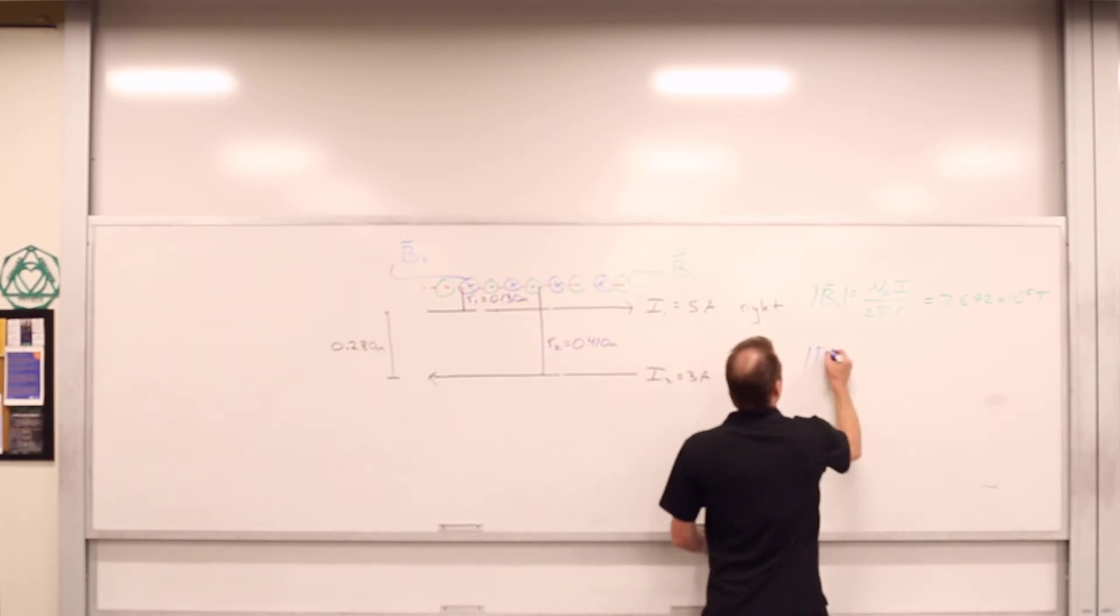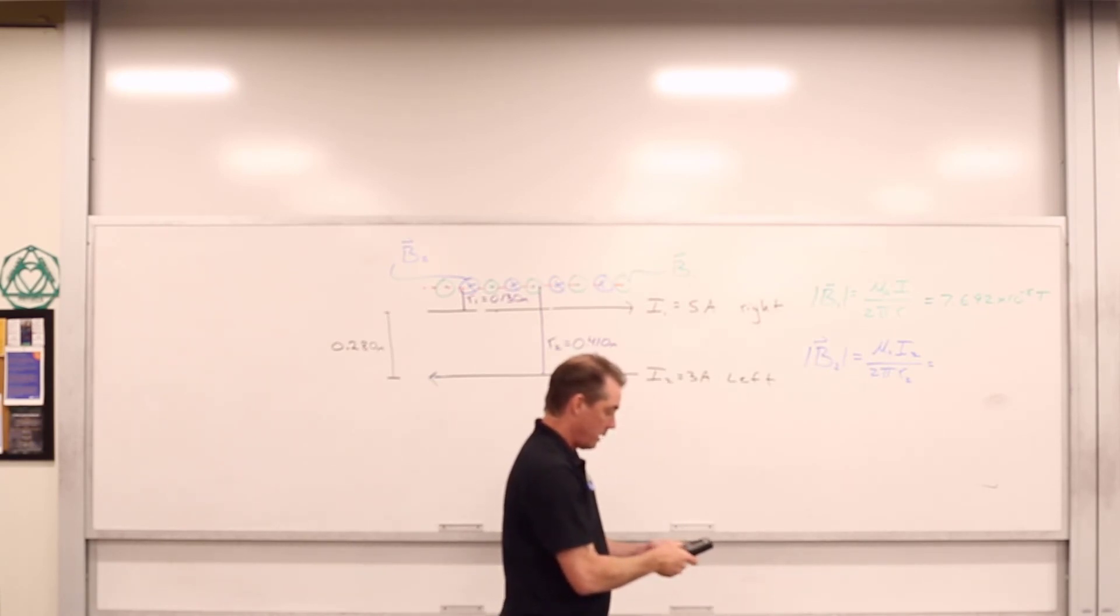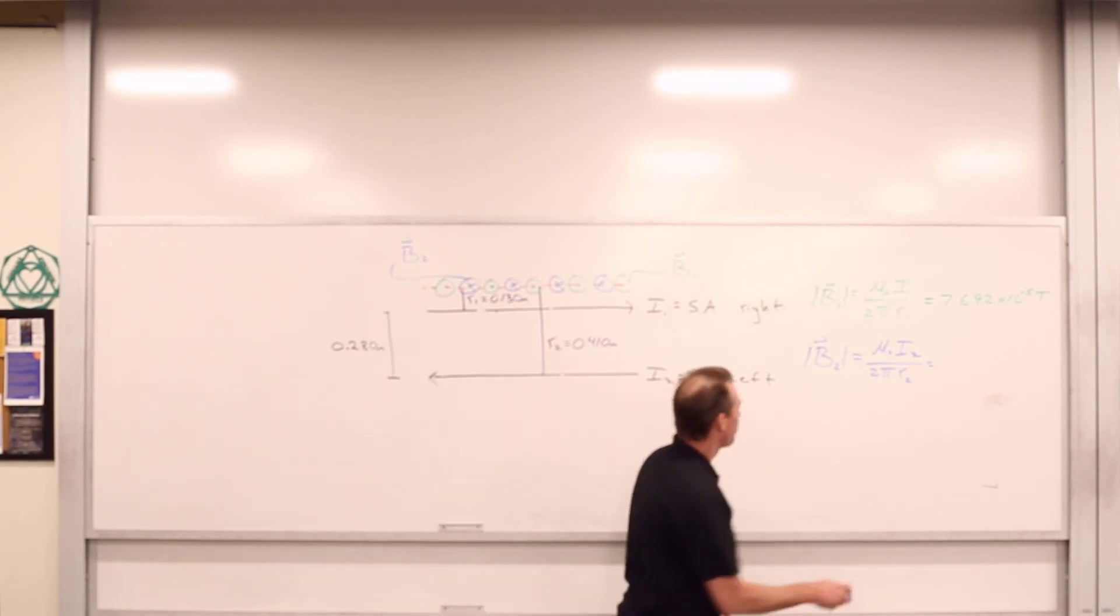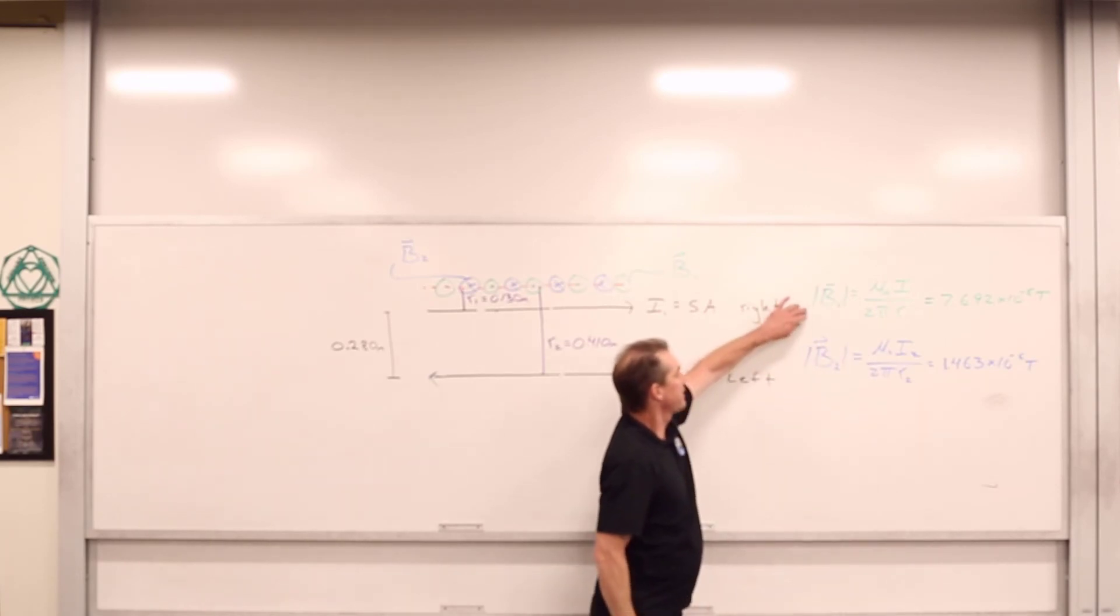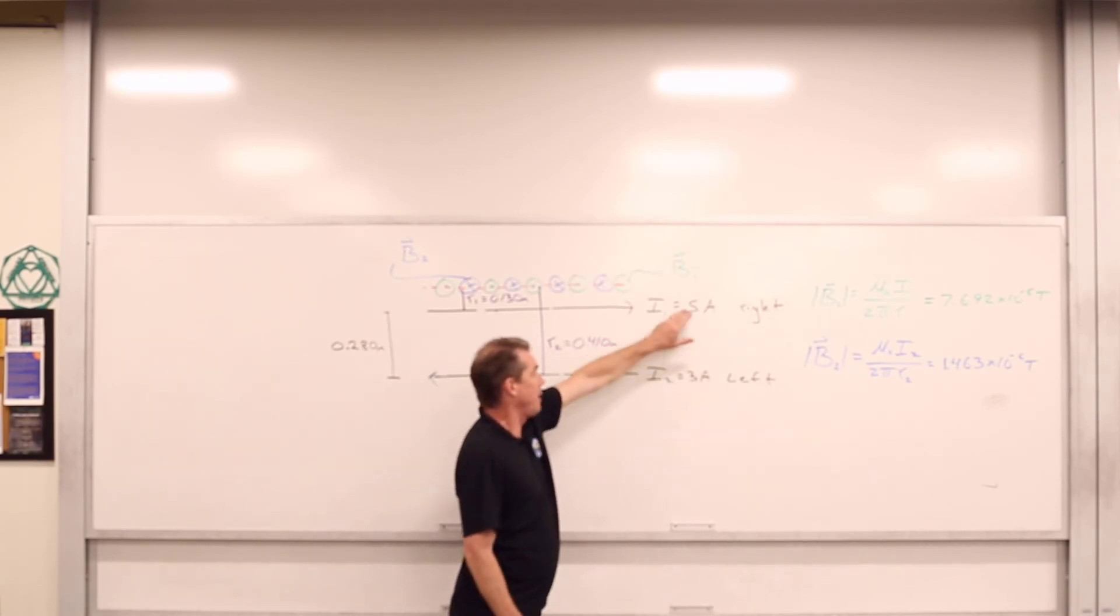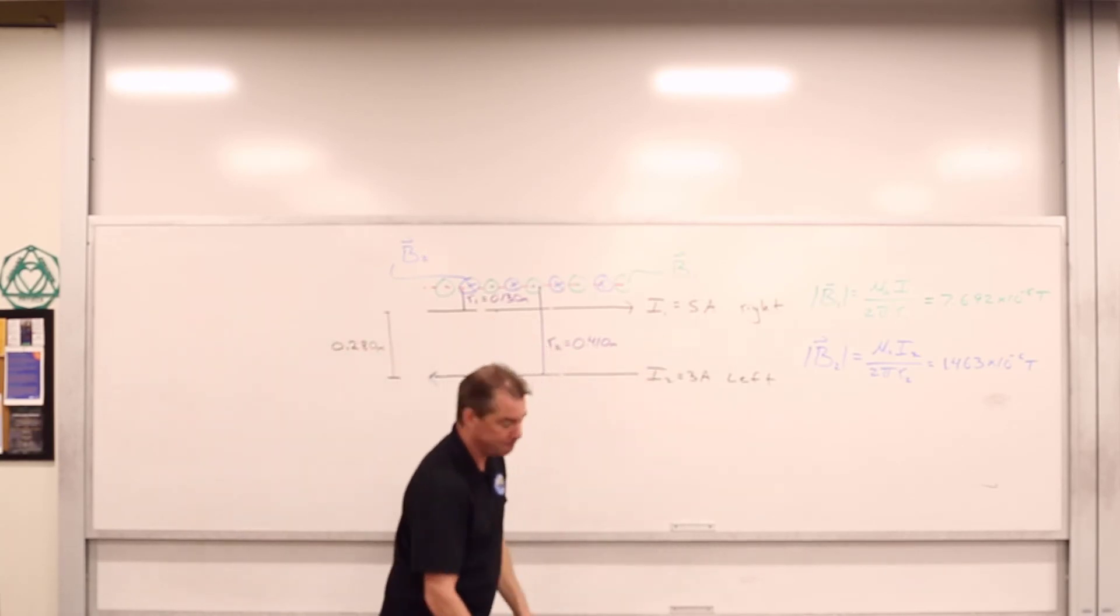And we can go ahead and calculate its magnitude. The magnitude of B2 is going to be equal to mu_0 I2 over 2 pi times R2. So let's throw that in here. I'm going to go ahead and change our I2 to 3 amps and change our R2 to 0.41 meters. And we get ourselves 1.463 times 10 to the negative 6 Tesla. Notice that the magnetic field generated by current carrying wire number one is greater in strength than the magnetic field generated by current carrying wire number two. Two reasons for that. The current in wire number one is greater than the current in wire number two, and we're closer to this one. So that should stand to reason that the magnetic field is going to be stronger nearest to the larger current.